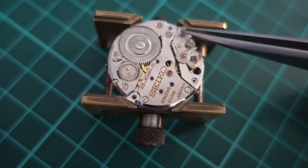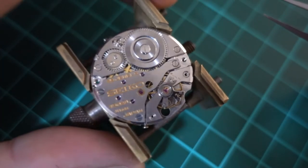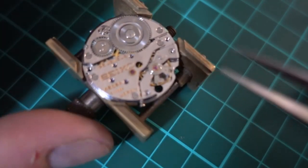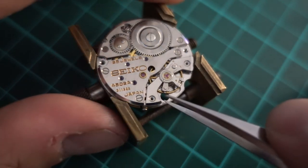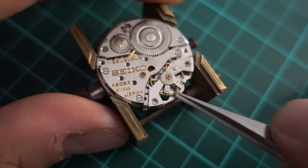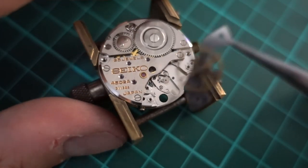Those are the two screws on the balance cock, and the balance cock is a bit of an oddball one because it's a two screw style one. Most watches only have one screw on the balance cock, but usually higher end movements, you know like Rolex has two screws on their balance cocks, will have a two screw balance cock.